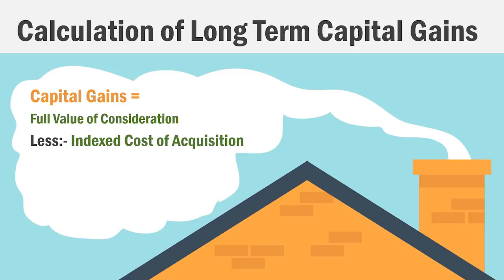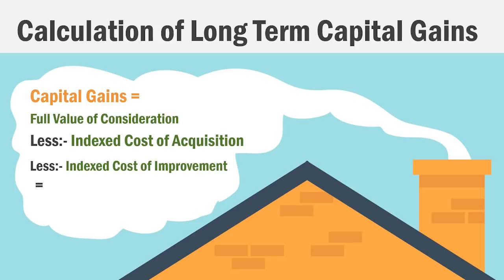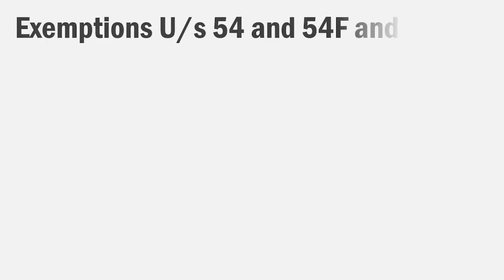Indexing is a straightforward topic. We also take the indexed cost of improvement — if you made any improvements over the years, we bring that value to today's date as well. After subtracting all these, we arrive at our long-term capital gains.